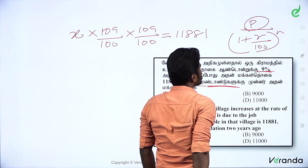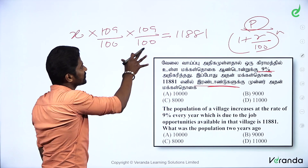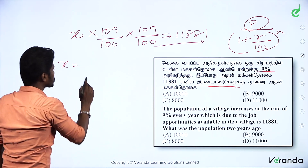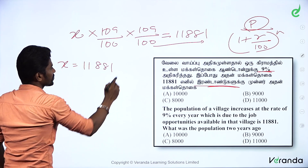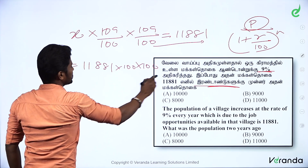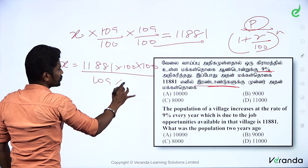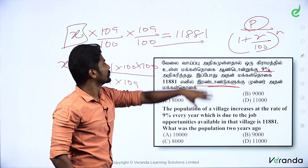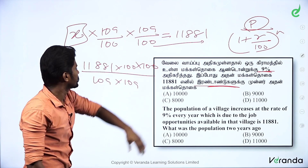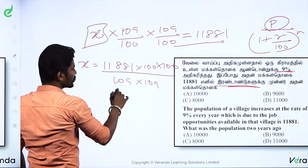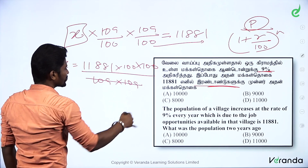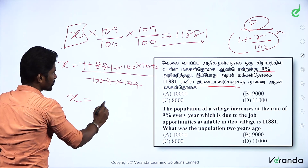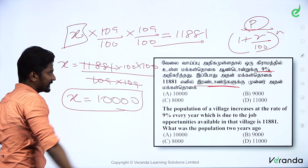The formula is: P divided by (1 plus R divided by 100) whole power N. P is the present value, R is the percentage value. So we solve: X equals 11,881 into 100 into 100, divided by 901 into 901. The numerator will be the number, the denominator will be the division. Cut the number — 901 into 901. We get the result: 11,881. Cut the number. This question gives 10,000.